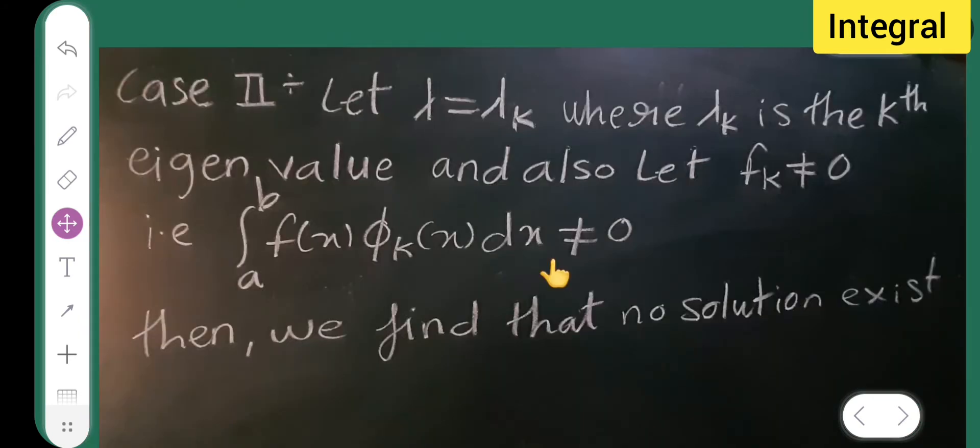Case 2 is let lambda equal lambda k where lambda k is the kth eigenvalue. And also, let fk is not equal to 0. That is, integral of a to b f of x phi k of x dx is not equal to 0. Then we find that no solution exists.